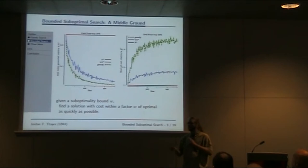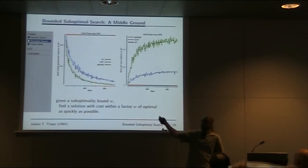Bounded suboptimal search tries to find a middle ground between these two extremes of optimal solving and no guarantees whatsoever, by finding solutions guaranteed to be within some user-specified factor W of optimal as quickly as possible. One algorithm for this is weighted A-star. You can see it's not quite as fast as greedy, but substantially quicker than A-star. The solutions are better than greedy and guaranteed to be within some factor W of optimal.